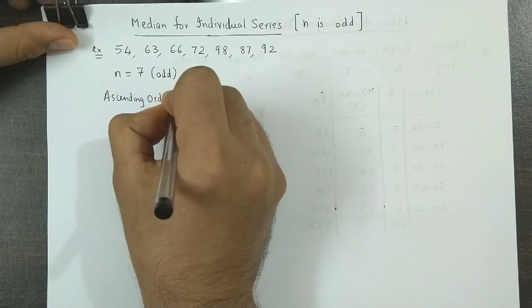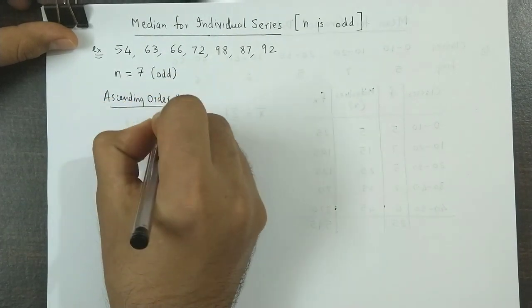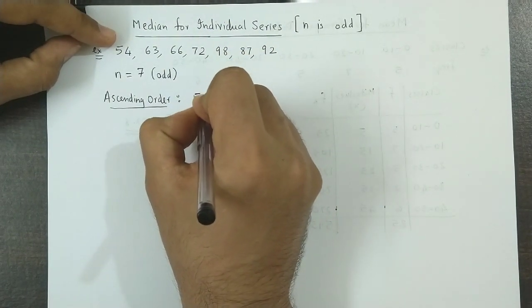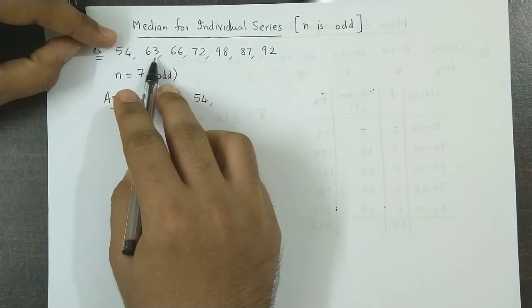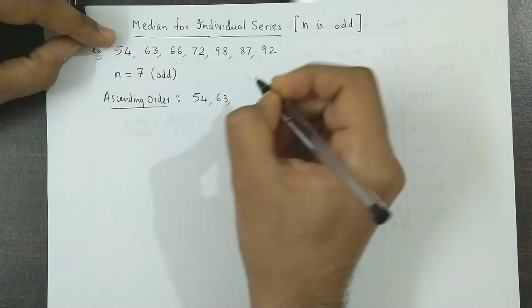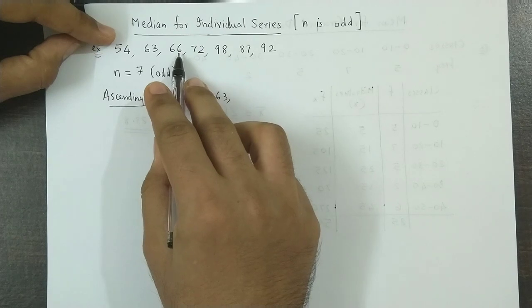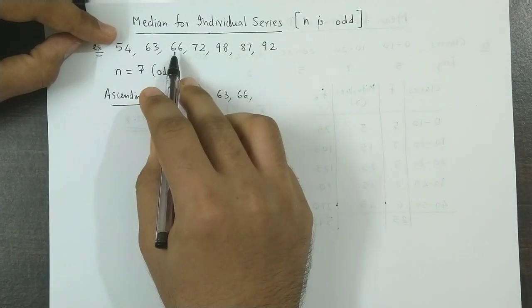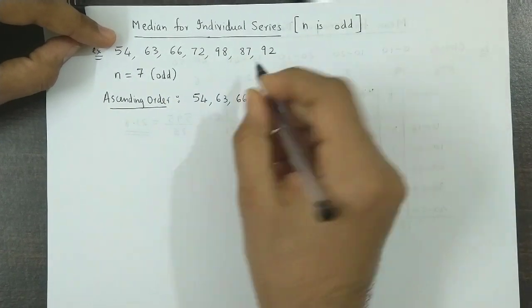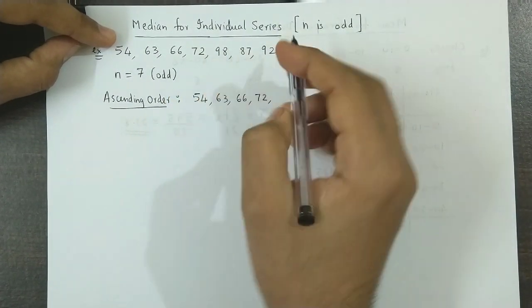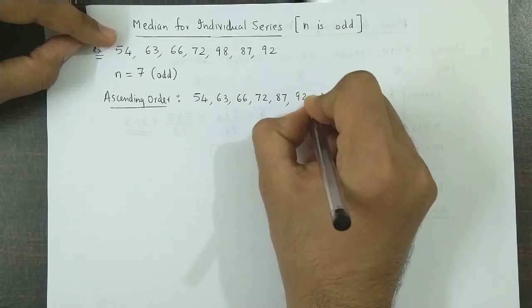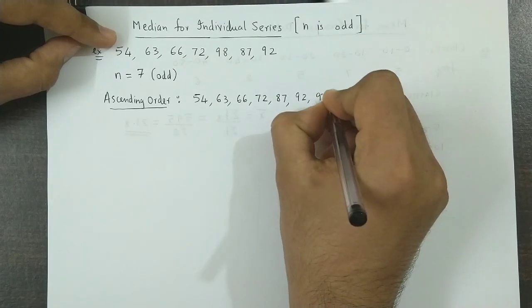Now ascending order starts with the least value. Now the least value here is 54. Next would be 63. Next would be 66. Next value would be 72. After 72 comes 87. Next would be 92. And lastly 98.